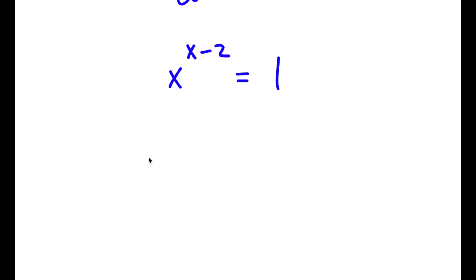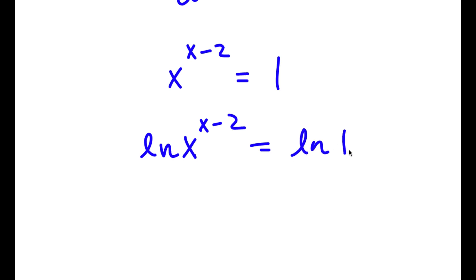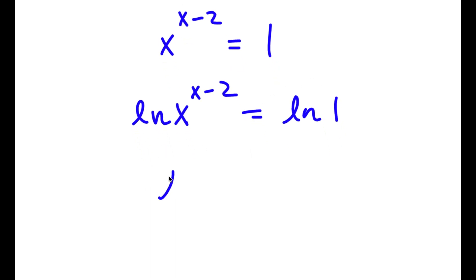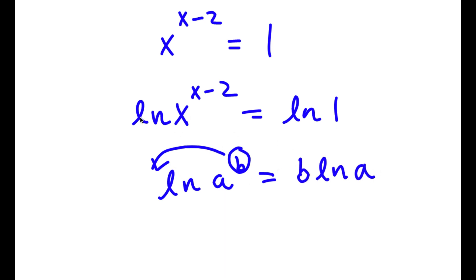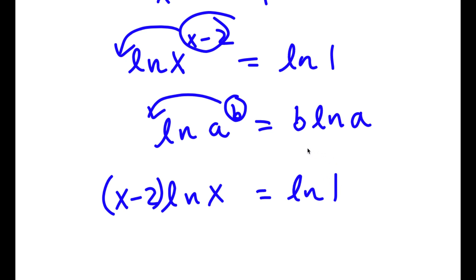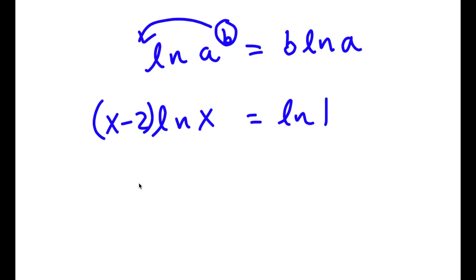Now I'm going to take the ln on both sides, so I get ln of x to the power of x minus 2 is equal to ln 1. An important property of logarithms is that ln of a to the power of b equals b times ln a, so I can move x minus 2 to the front. This gives me x minus 2 times ln x is equal to ln 1. And the value of ln 1 is simply 0, so now I have x minus 2 times ln x is equal to 0.